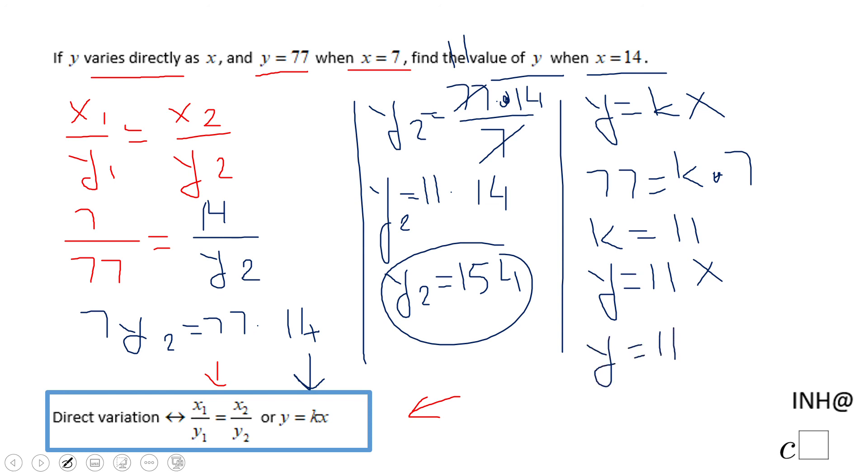And we can go to the second part and we can find the y value now when x is 14. So you notice we end up the same situation, 11 times 14 which gives me 154.